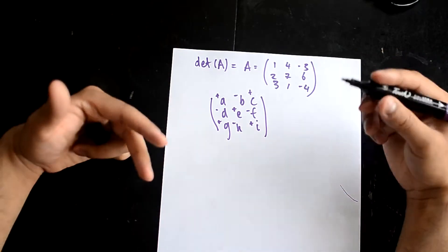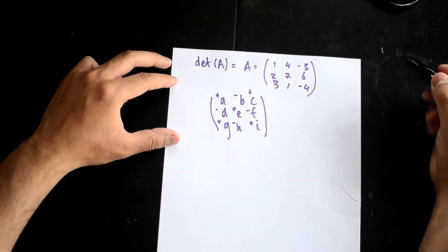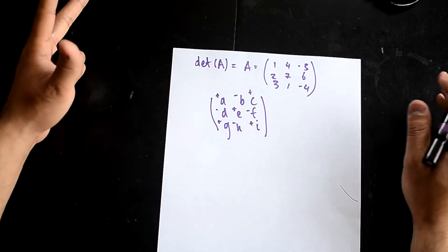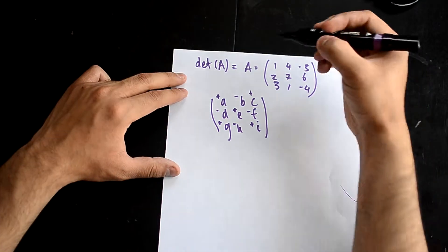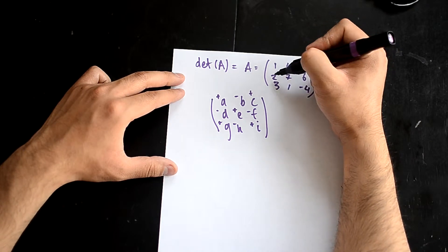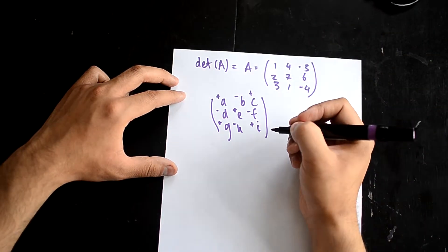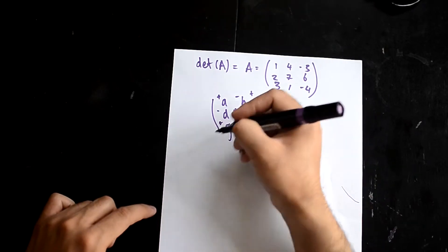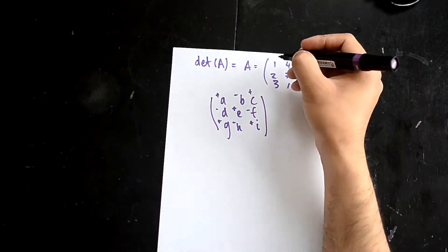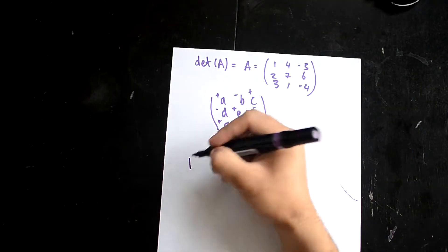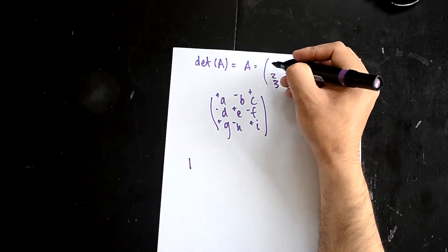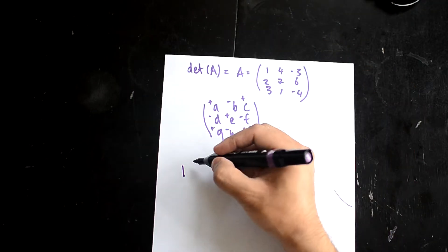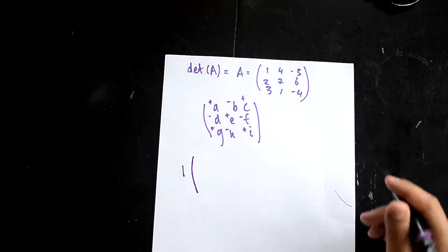I'm going to treat this problem in steps. The first thing you do is choose any row or column. I'm going to choose this row: 1, 2, and 3. So now what you're going to do is take the number 1. I'll put a 1 here, and by looking at the sign matrix, it's positive, so it stays as 1.